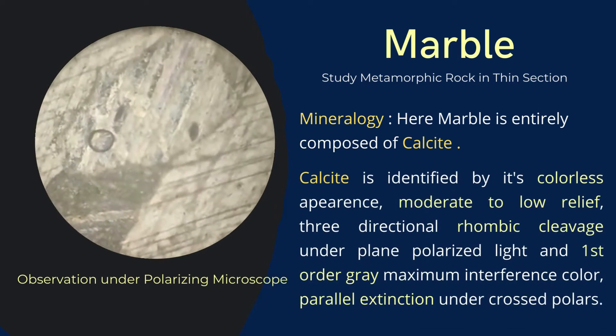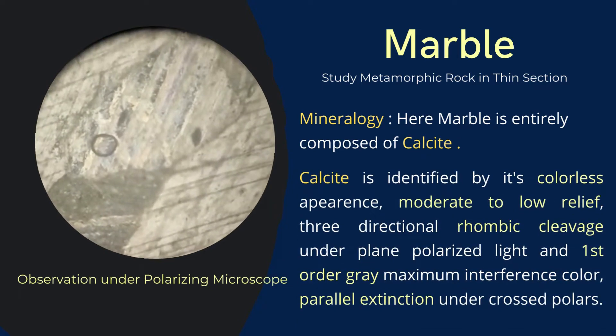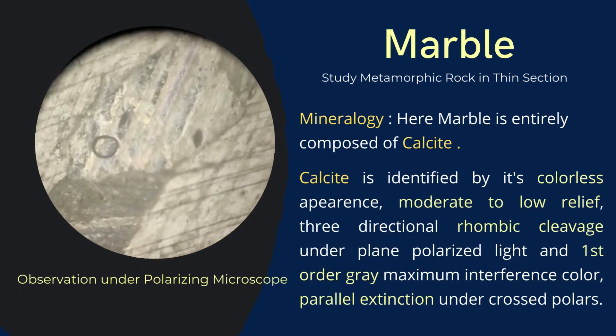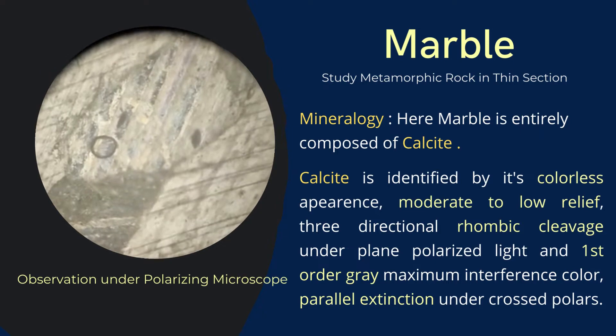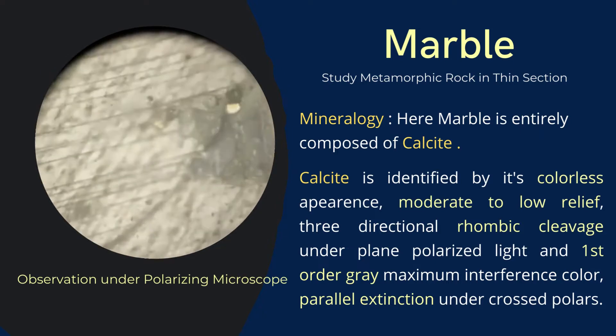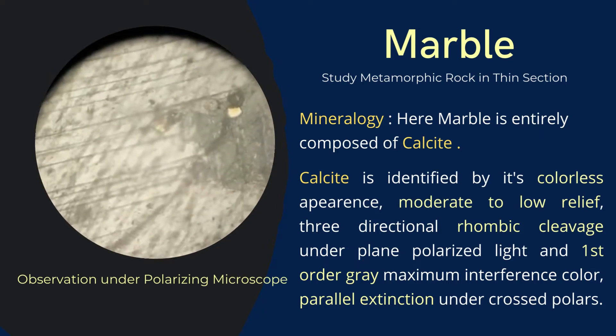Calcite is identified by its colorless appearance, moderate to low relief, and three-directional rhombic cleavage under plain polarized light.